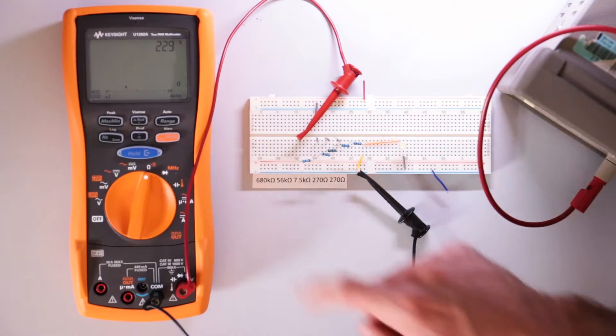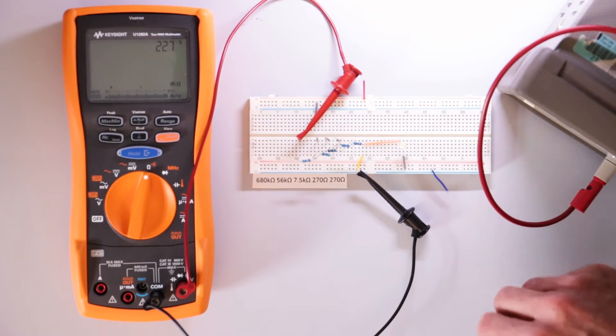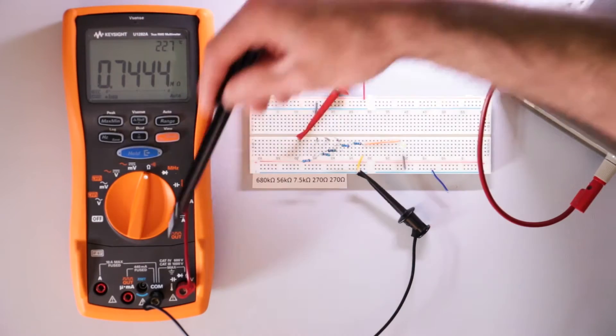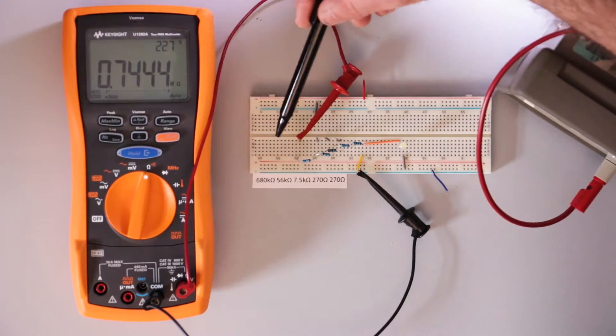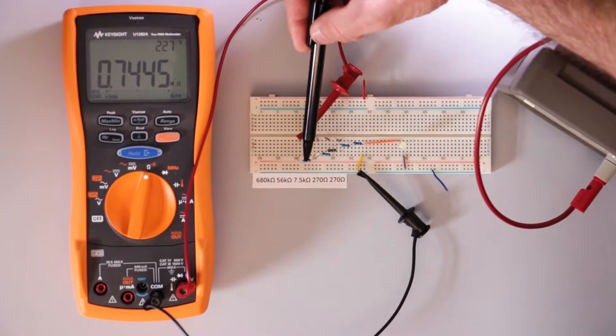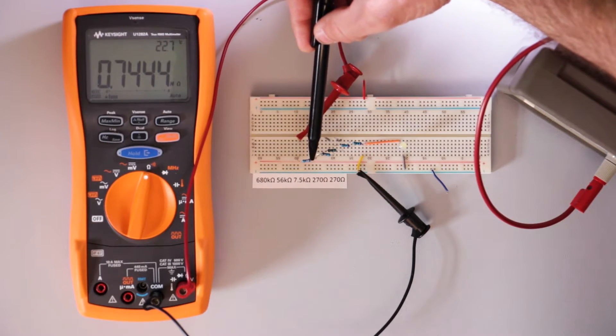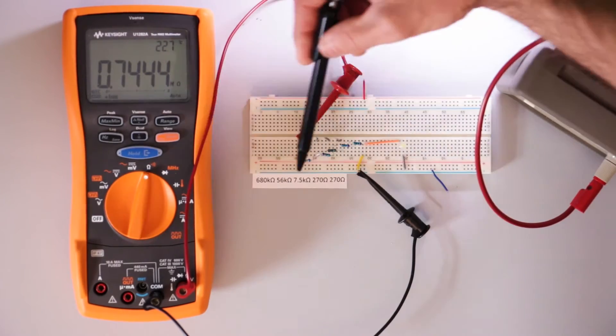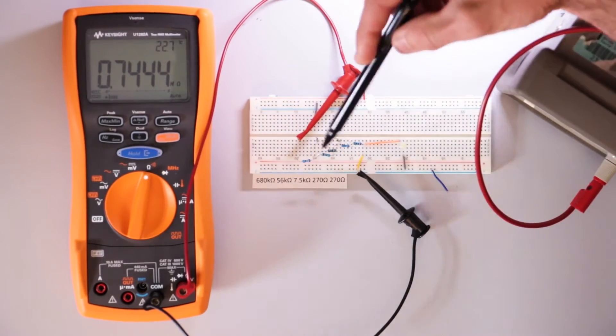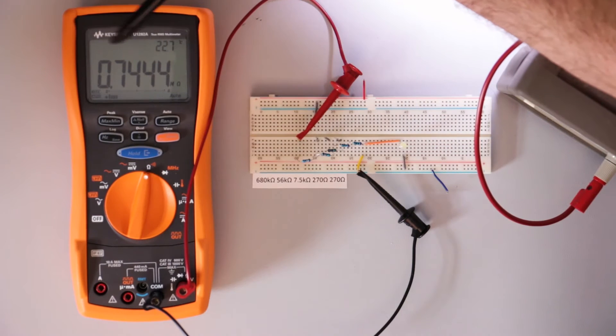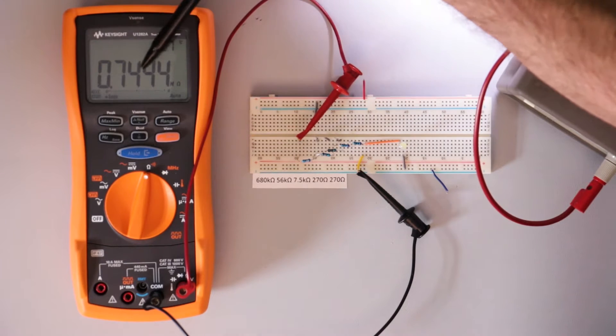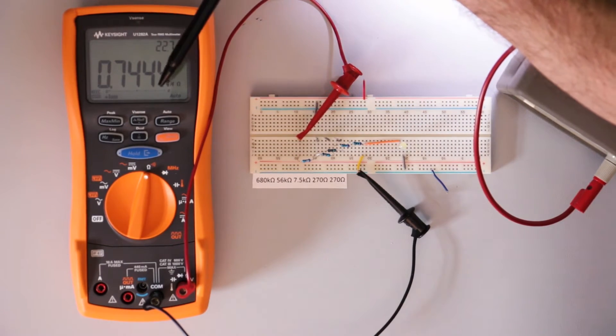So I will turn on the DMM to ohms and I'm basically measuring between, so I'm coming out and I'm measuring between this wire here which is connected to this leg of the resistor and then this resistor, these two resistors are connected together and then these two. So if you can kind of visualize all the resistors right now are in series.